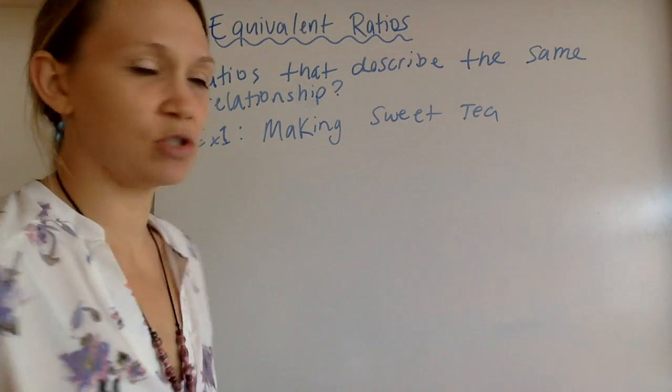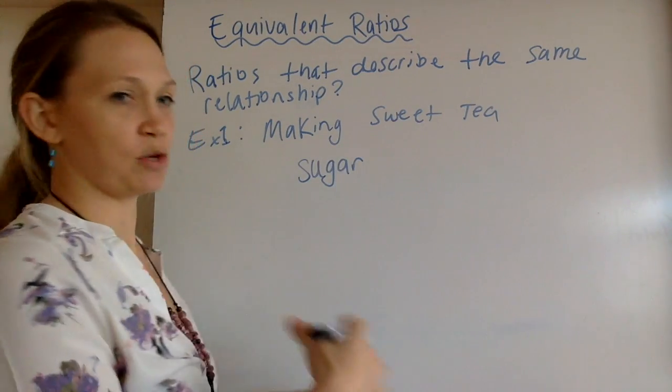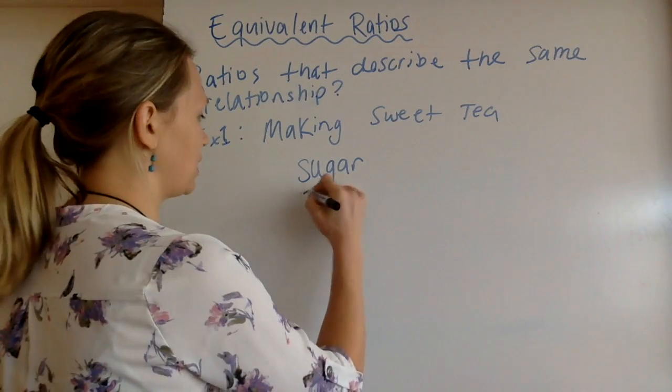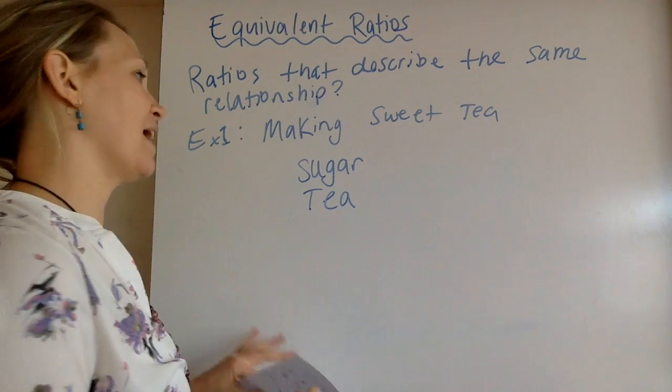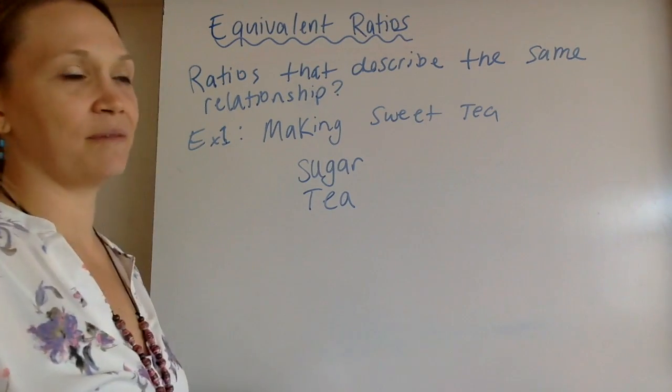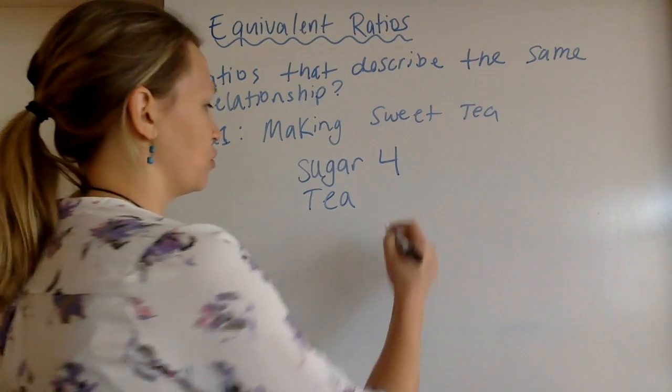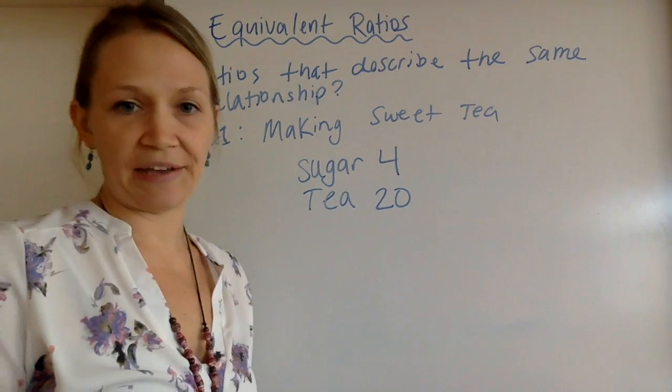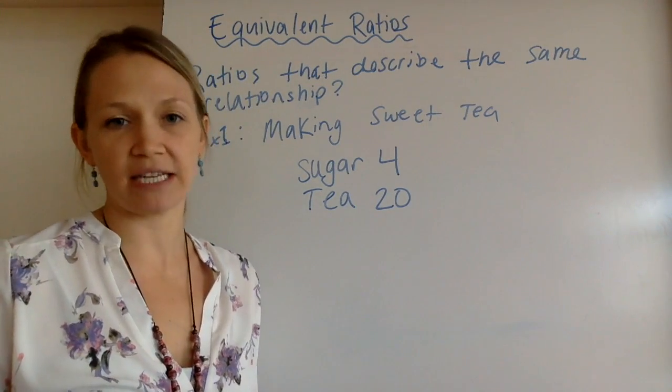We need the sugar, and we need the tea. We'll just assume it's already mixed, it's brewed. Let's say that for every four tablespoons of sugar, we need 20 tablespoons of the tea. And then if you mix that up, that's a nice little sweet tea. It tastes just right.